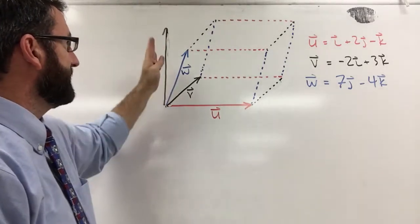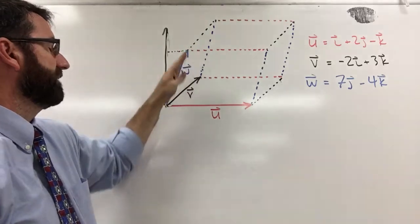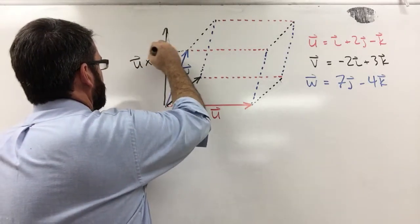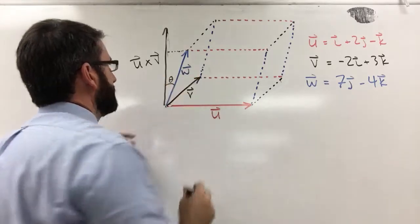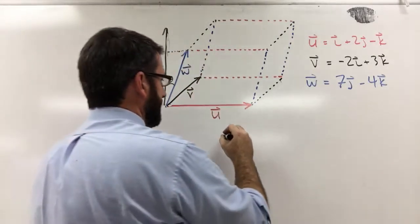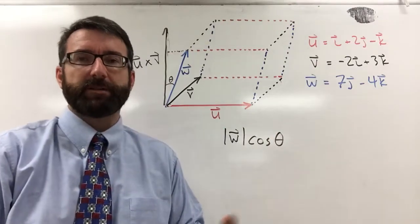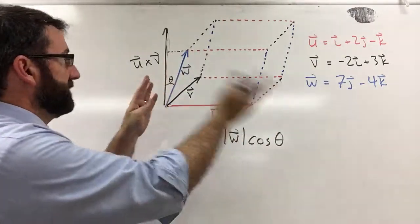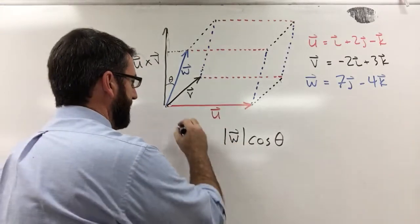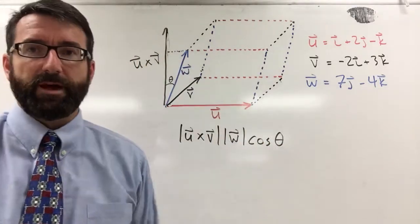Now we've got this perpendicular vector, and if we take the scalar component of vector w projected onto u cross v — letting theta be the angle between those — then the height is going to be given by the magnitude of w times the cosine of theta. That's our formula for the scalar projection of w onto u cross v. And if we multiply that height by the magnitude of u cross v, that's going to give us the volume of that parallelepiped.